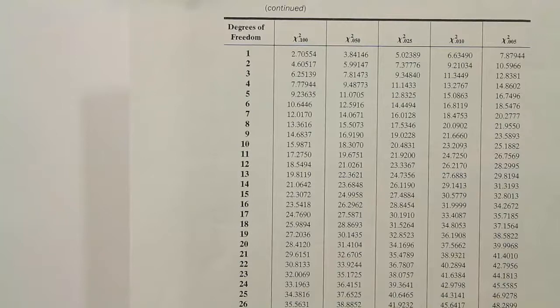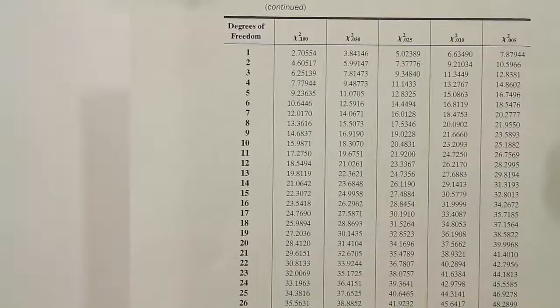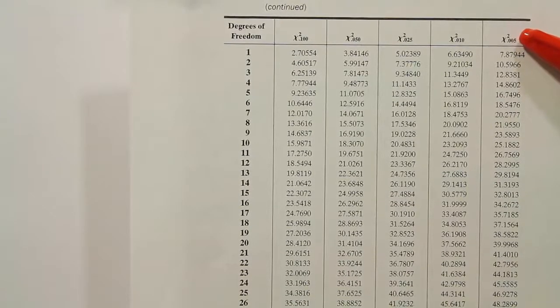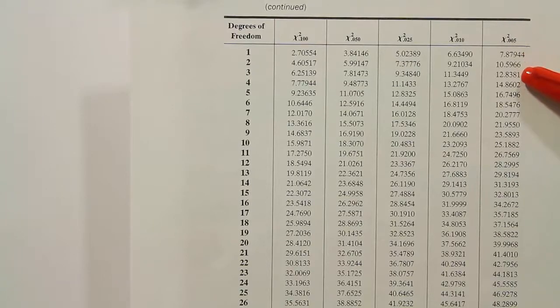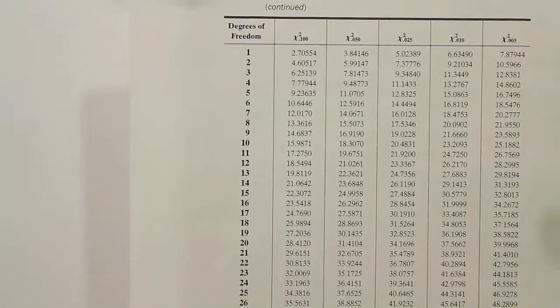We're back at the table here. We're looking in the 0.005 column. The 0.005 column is here. We're going to go down to 3 degrees of freedom. We find 12.8381.